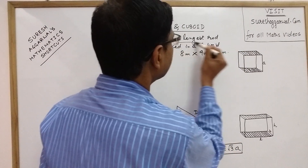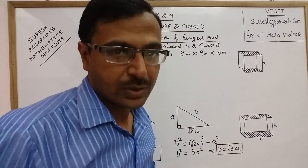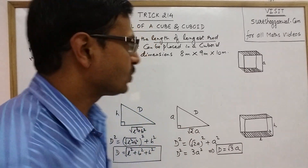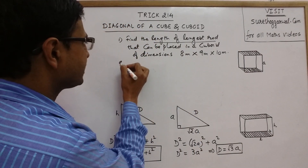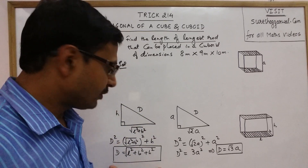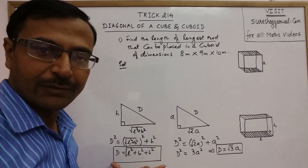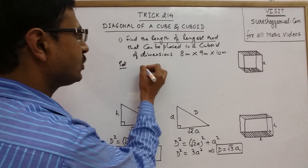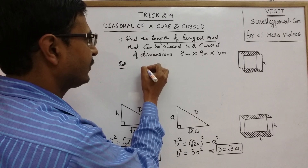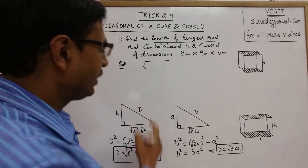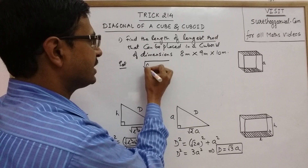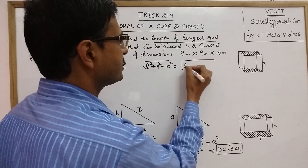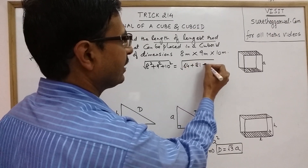Finding the length of the longest rod is a very common question for students of class 9th and 10th, and all students preparing for competitive exams. What we do is simply find the diagonal of the cuboid. Applying the formula, we take the square root of 8² + 9² + 10² = √(64 + 81 + 100).